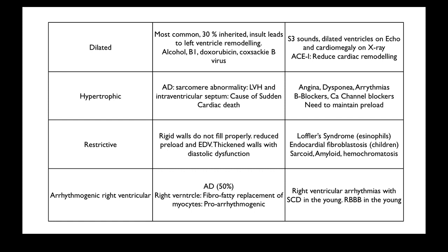Patients should be screened, and ECGs can be performed — the most common finding is a right bundle branch block in the young. These patients should go on to have ICDs (implantable cardiac defibrillators) implanted, so that if the patient were to go into VF, they could hopefully be cardioverted out of it.